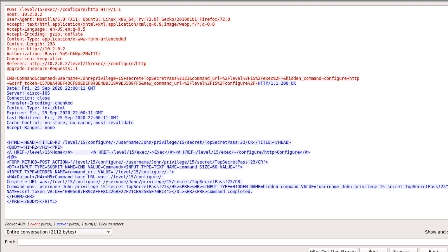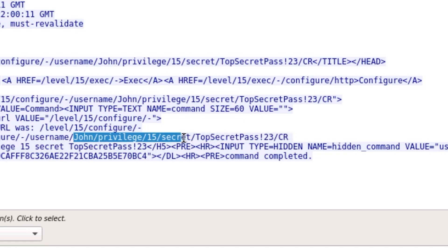And this is showing us the HTTP session that we just experienced from our workstation over to router two. But here's the bad news right here. In plain text, it's showing us right here, username John privilege 15 secret top secret pass exclamation mark two three and then a carriage return. Our password that we just configured at privilege level 15 for that user John is no longer safe because the eavesdropper on that network now has that information as well.